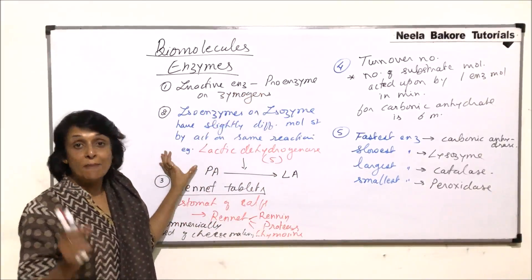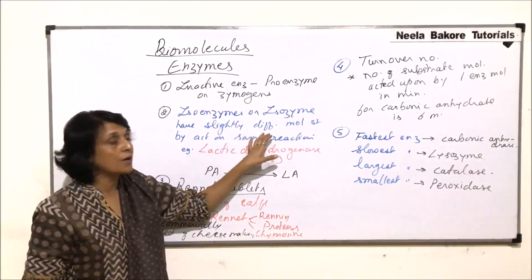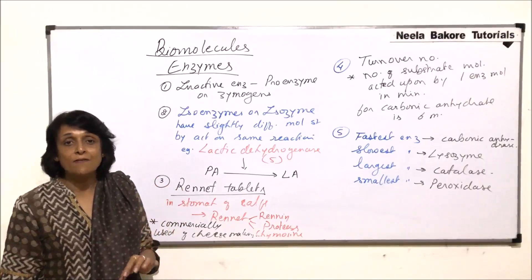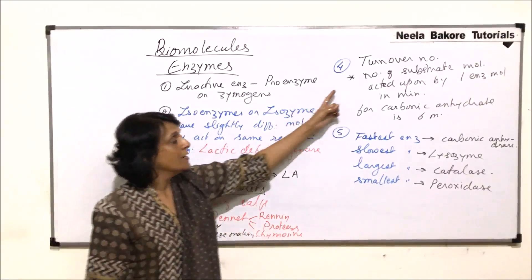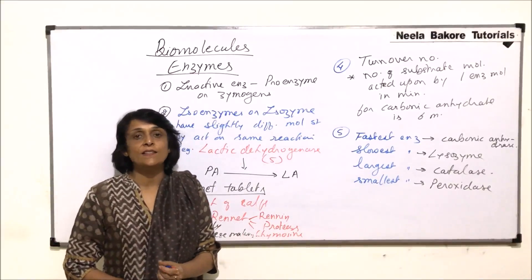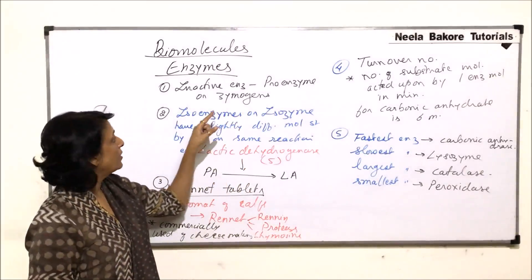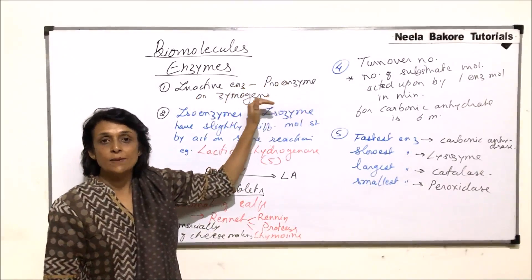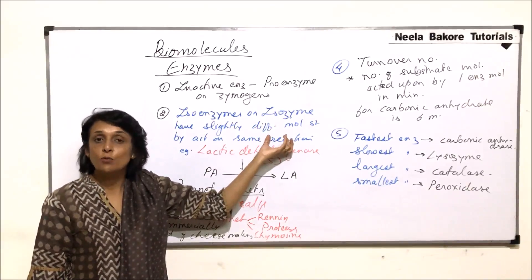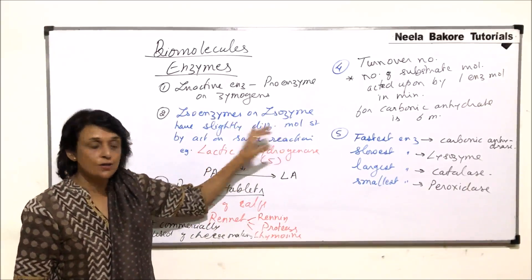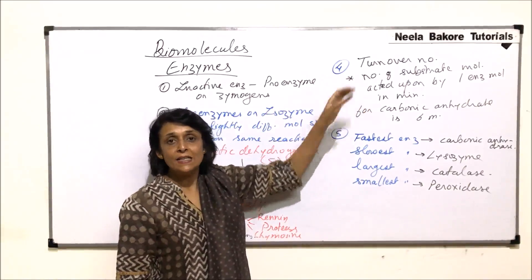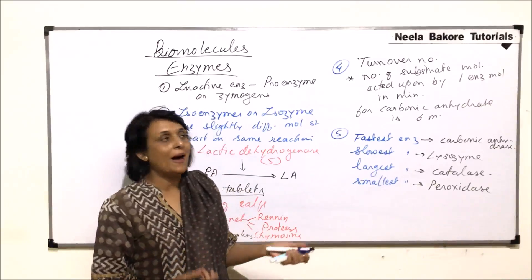To recap: many enzymes are inactive and are called pro-enzymes or zymogens. Some enzymes are slightly different in molecular structure but catalyze the same reaction — these are called isozymes. An example discussed was rennet tablets obtained from calf stomach gastric secretion. Turnover number is the number of substrate molecules acted upon per enzyme per minute.